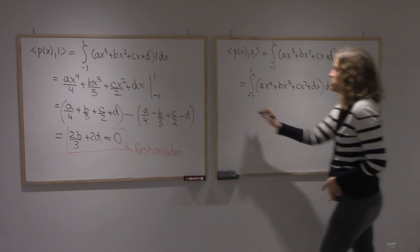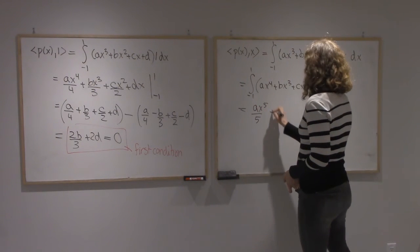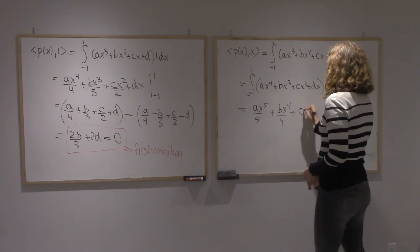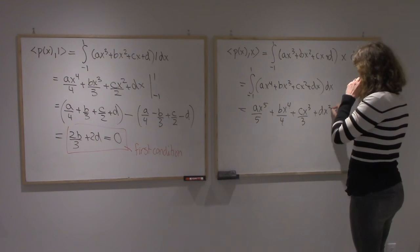Alright, so I get Ax⁵/5 + Bx⁴/4 + Cx³/3 + Dx²/2.